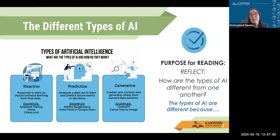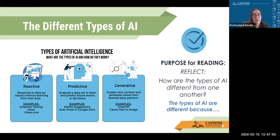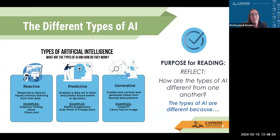First, I want to talk about the different types of AI and how they differ from one another. The first type — which is what we're talking about today — is reactive AI. It responds to data or inputs without really learning from that data. It's kind of just doing what you put in, not making creative jumps. It's simply saying: if this is what you put in, this is what I got out of it.